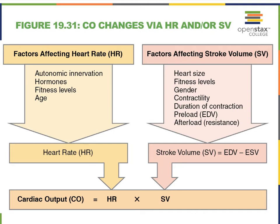Cardiac output is the product of heart rate and stroke volume. The formula for stroke volume is the difference between the volume of blood at the end of relaxation — the end diastolic volume — and the end systolic volume, which is the volume of blood at the end of contraction.